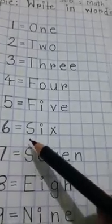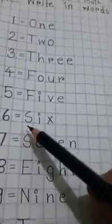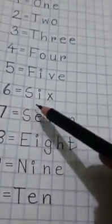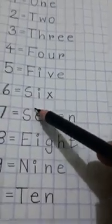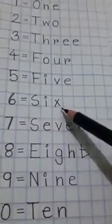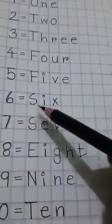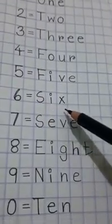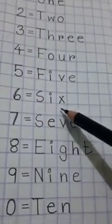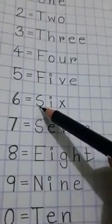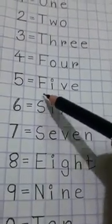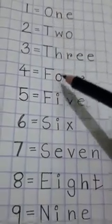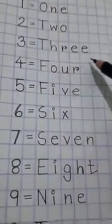Here is six. At first I will write S, then I will write I, then I will write X. S-I-X, six. Students, remember that the first letter is a capital letter and the other letters are small letters, okay.